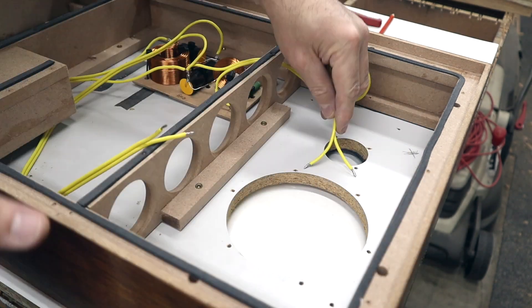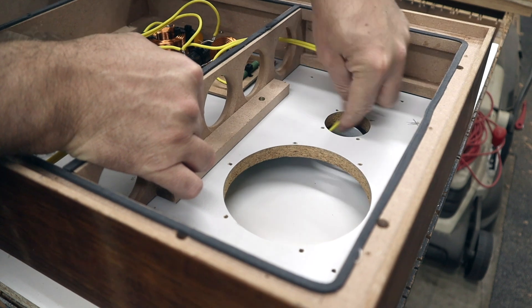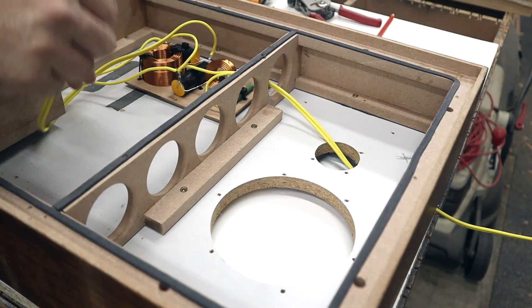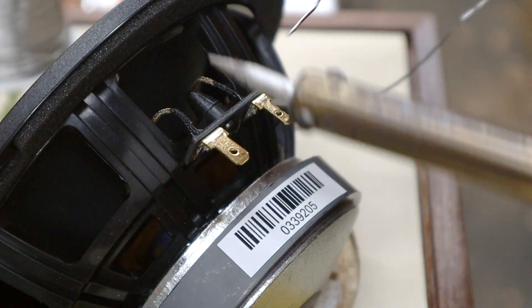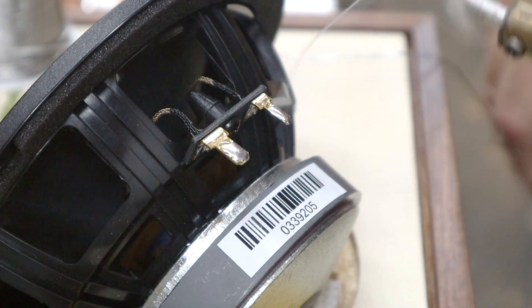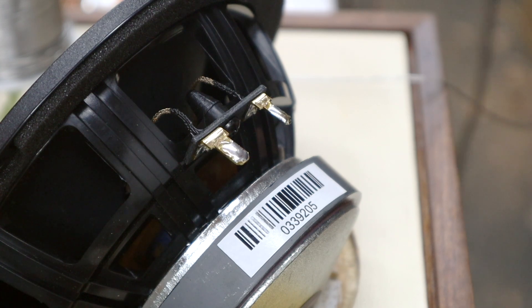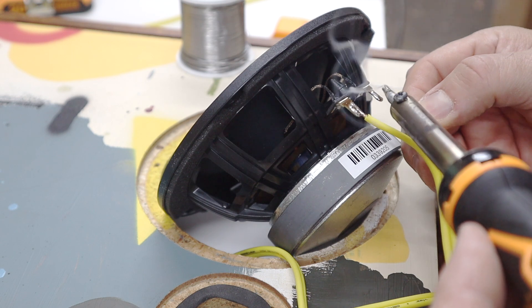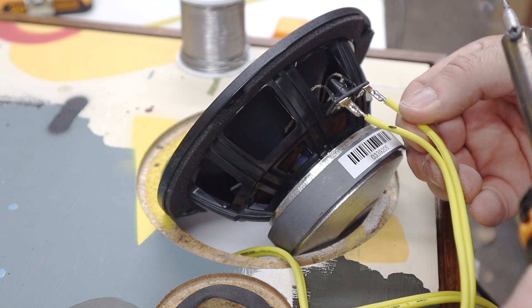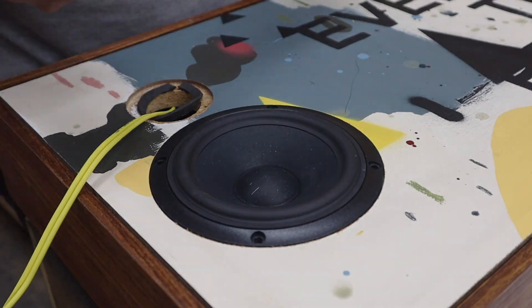Once the crossover board is secured inside the enclosure, pull the wires through to the respective driver holes. Pre-tin the speaker terminals with solder and solder the wires to the speaker terminals. Make sure to get the polarity correct and check the circuit diagram. Screw the speaker in place and you are done.